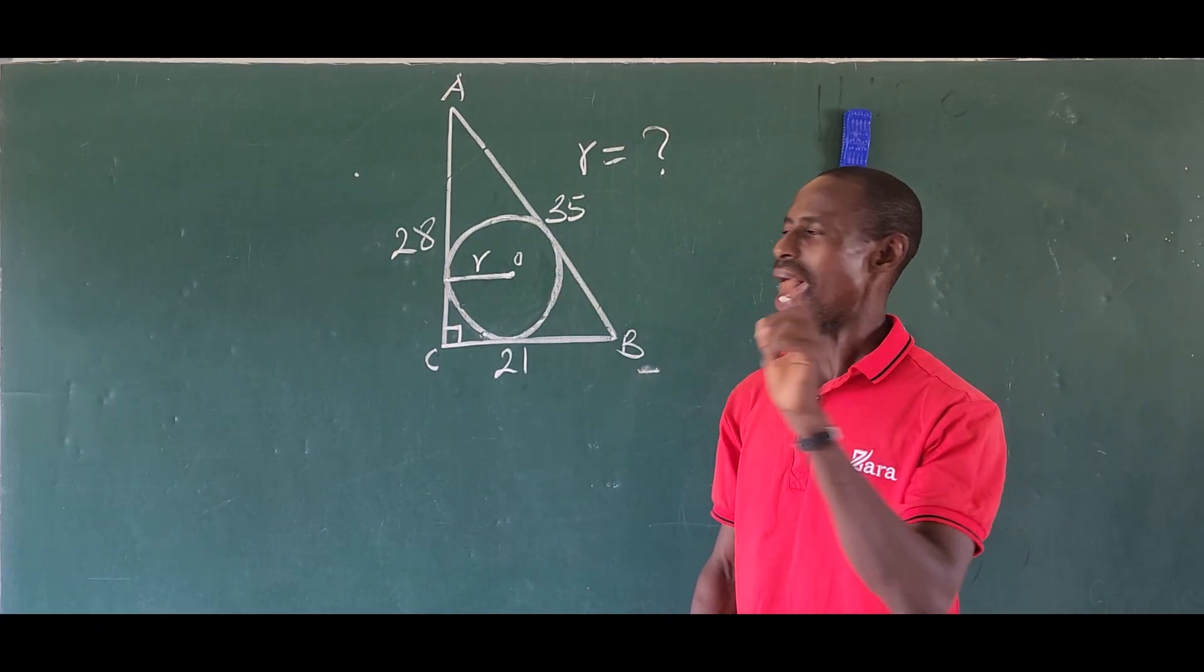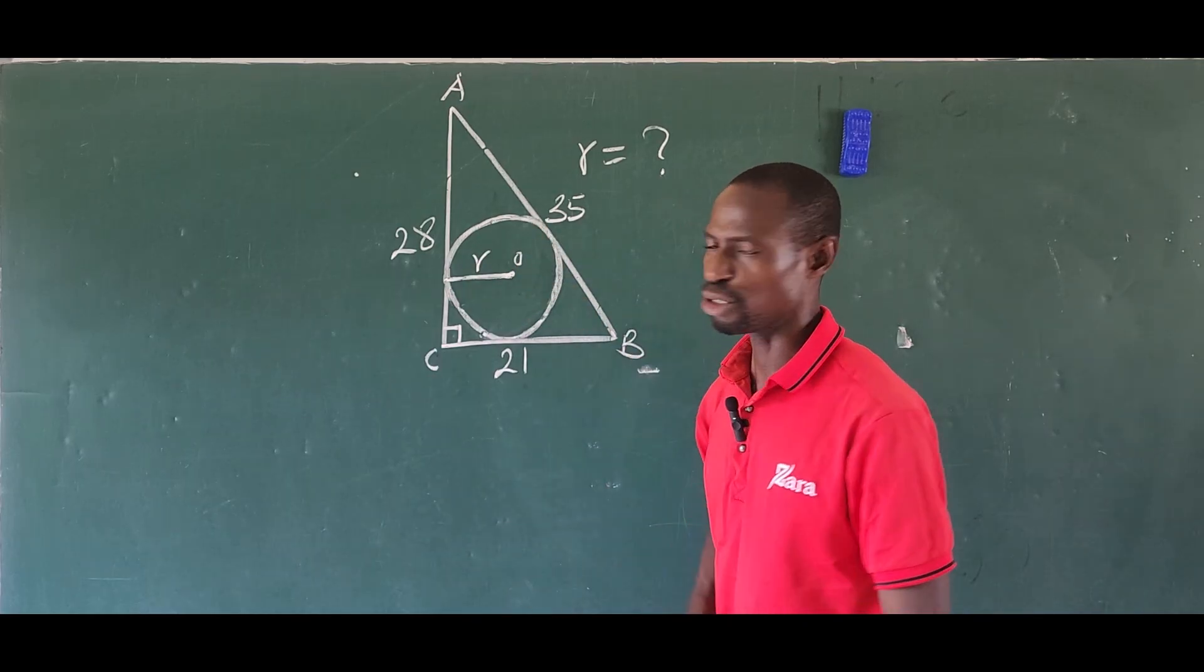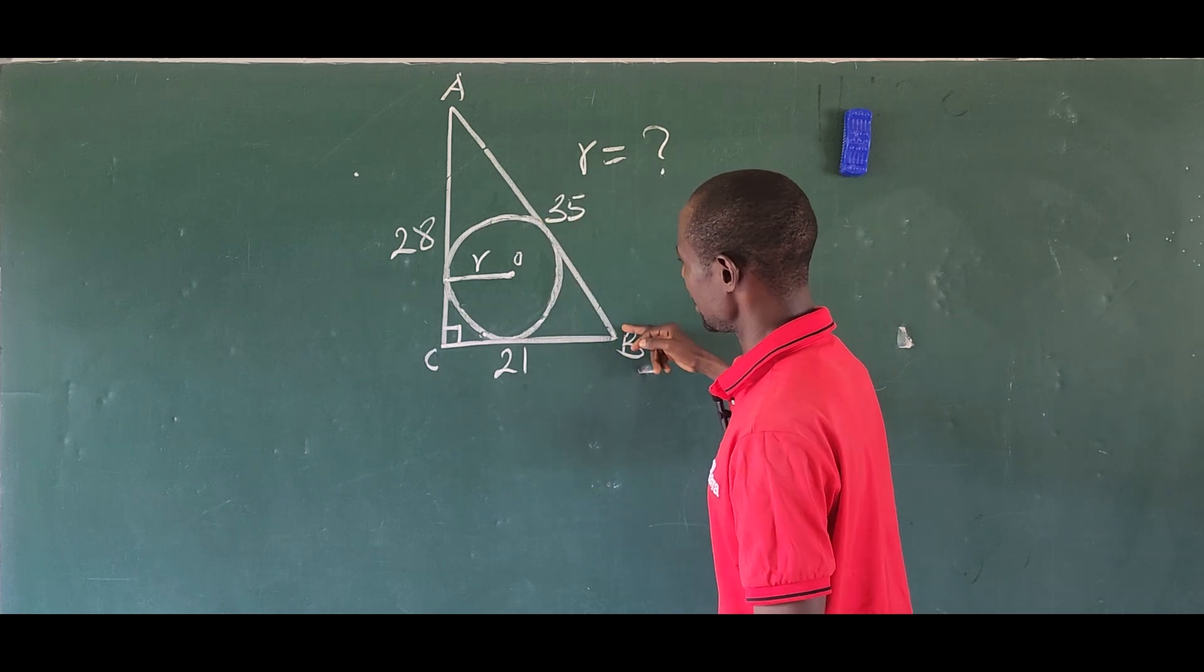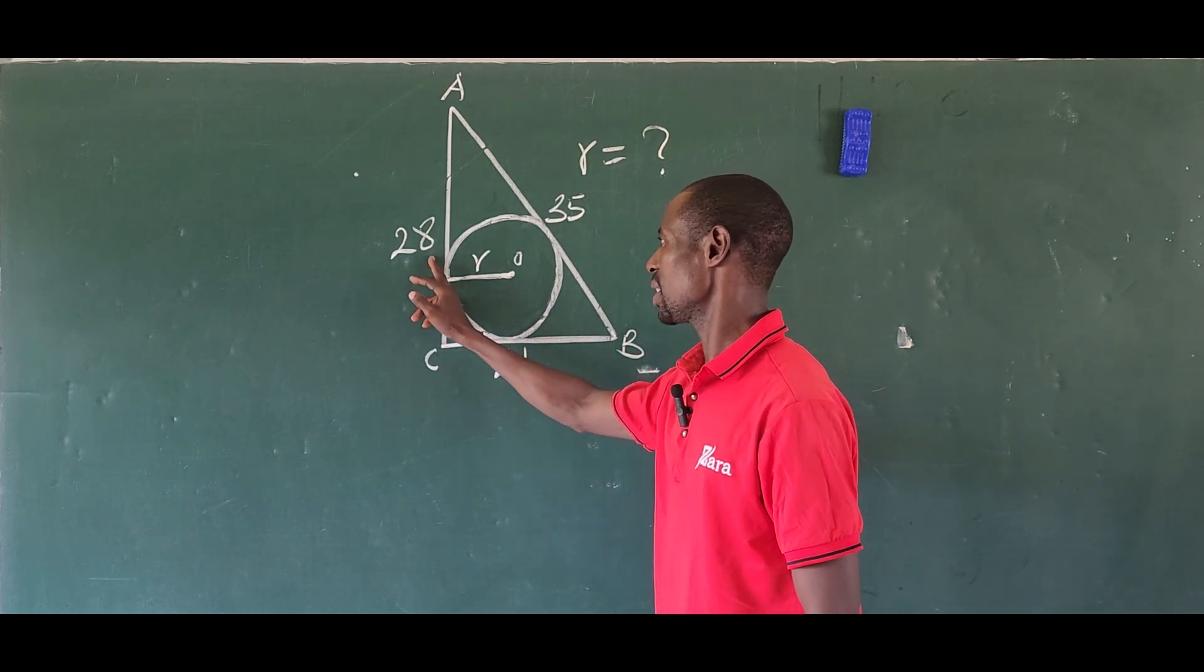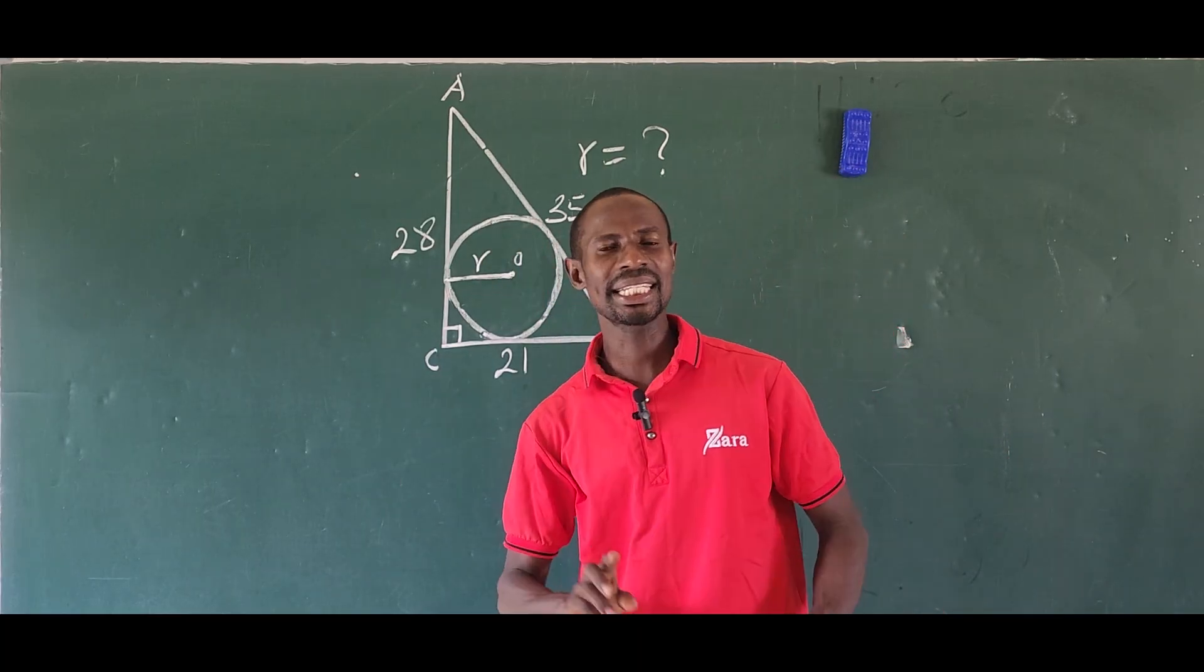If you check this inscribed circle, you discover that this circle is touching the hypotenuse, touching the adjacent, and also touching the opposite. Since it's touching all three sides of the triangle, there is a strong relationship between this circle and the triangle.